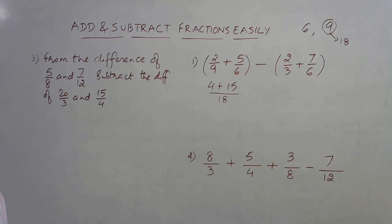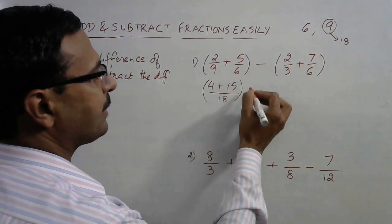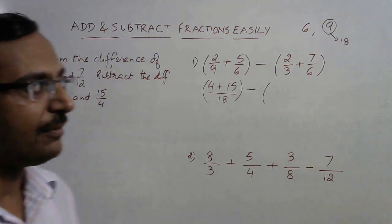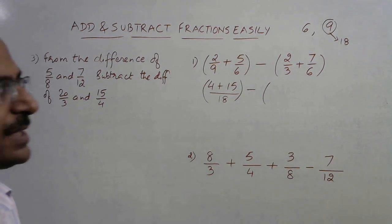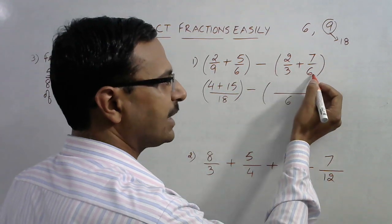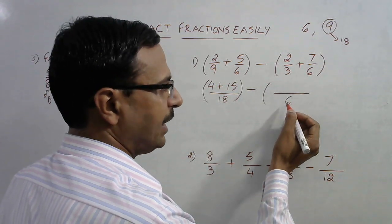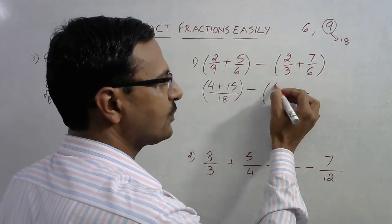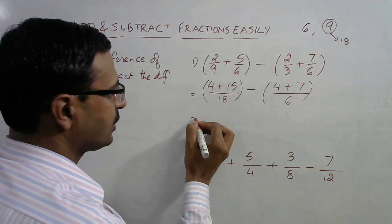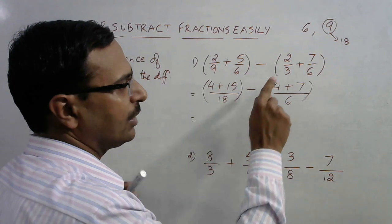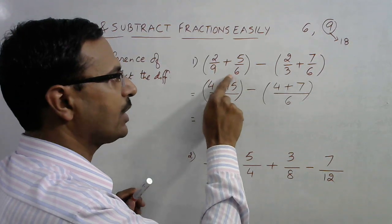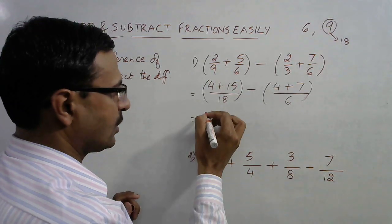For the second bracket with denominators 3 and 6: 3 divides 6 exactly, so the LCM of 3 and 6 is 6 itself. Whenever one number exactly divides the other, the larger number is the LCM. We have used two shortcuts here: first, when the smaller number exactly divides the larger, take the larger as LCM; second, when it does not divide evenly, take multiples of the larger until one is divisible by the smaller.